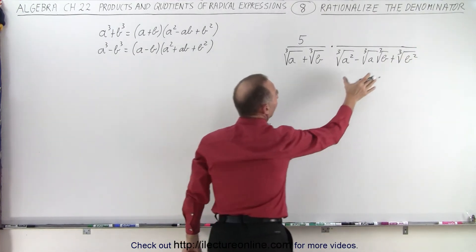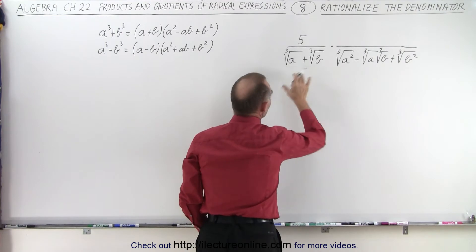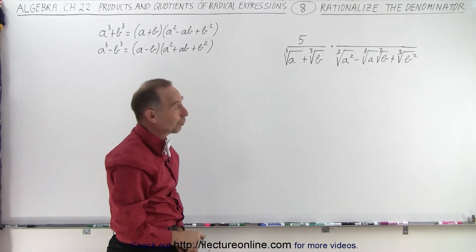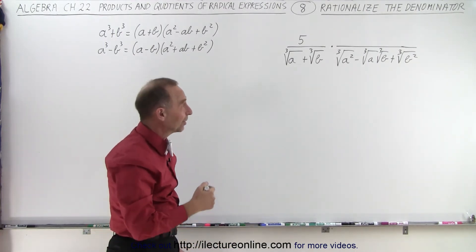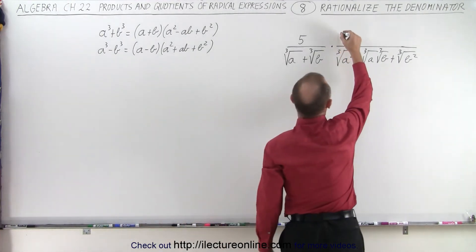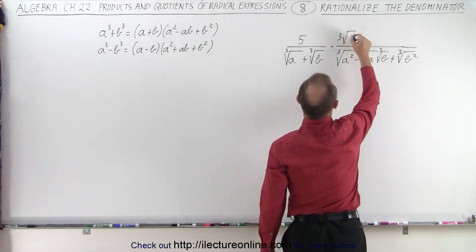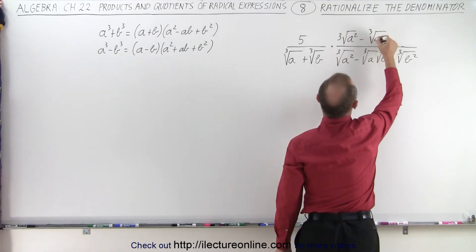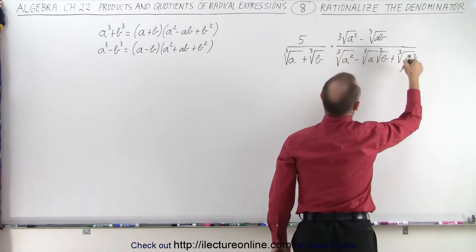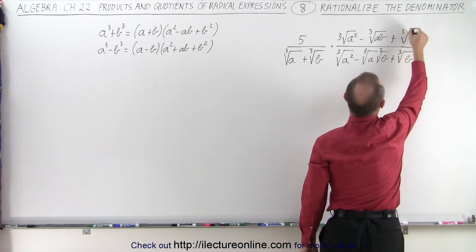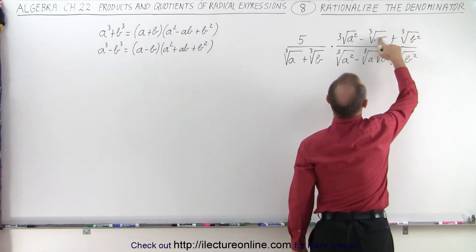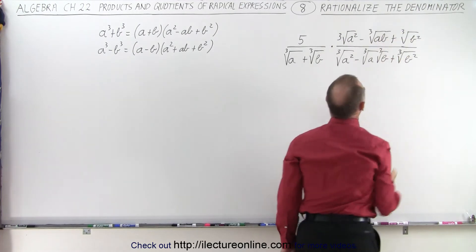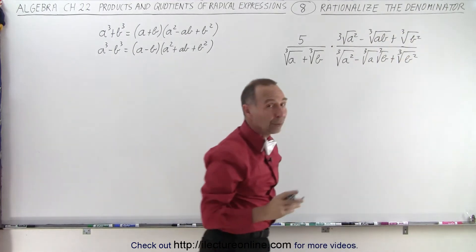When we multiply this times that conjugate expression, we'll end up with a plus b in the denominator. Of course, we need to multiply with exactly the same thing in the numerator as well. That will do the trick.